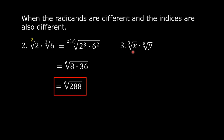Example number 3: the cube root of x times the fifth root of y. The radical here is x and the radical here is y, so the radicals are different. The index here is 3 and the index here is 5, so the indices are different.